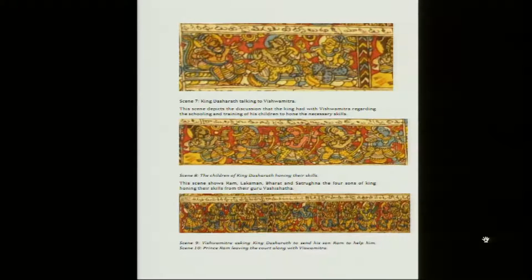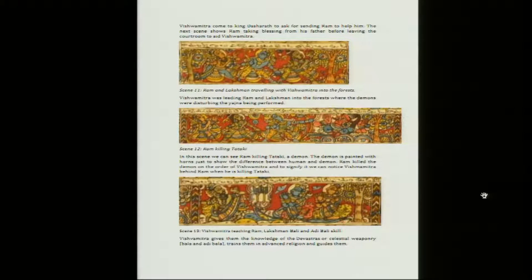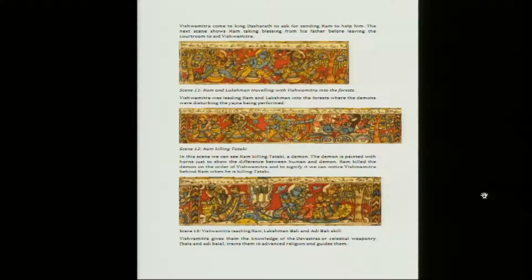We slowly see in a sequence which is slightly compressed: Vishwamitra asking King Dasharatha to send his son Ram to help him, and Prince Ram leaving the court along with Vishwamitra. Vishwamitra comes to King Dasharatha to ask for sending Ram to help him. The next scene shows Ram taking blessings from his father before leaving the court to aid Vishwamitra. Ram and Lakshman travelling with Vishwamitra into the forest, where the demons were disturbing the yagna being performed.